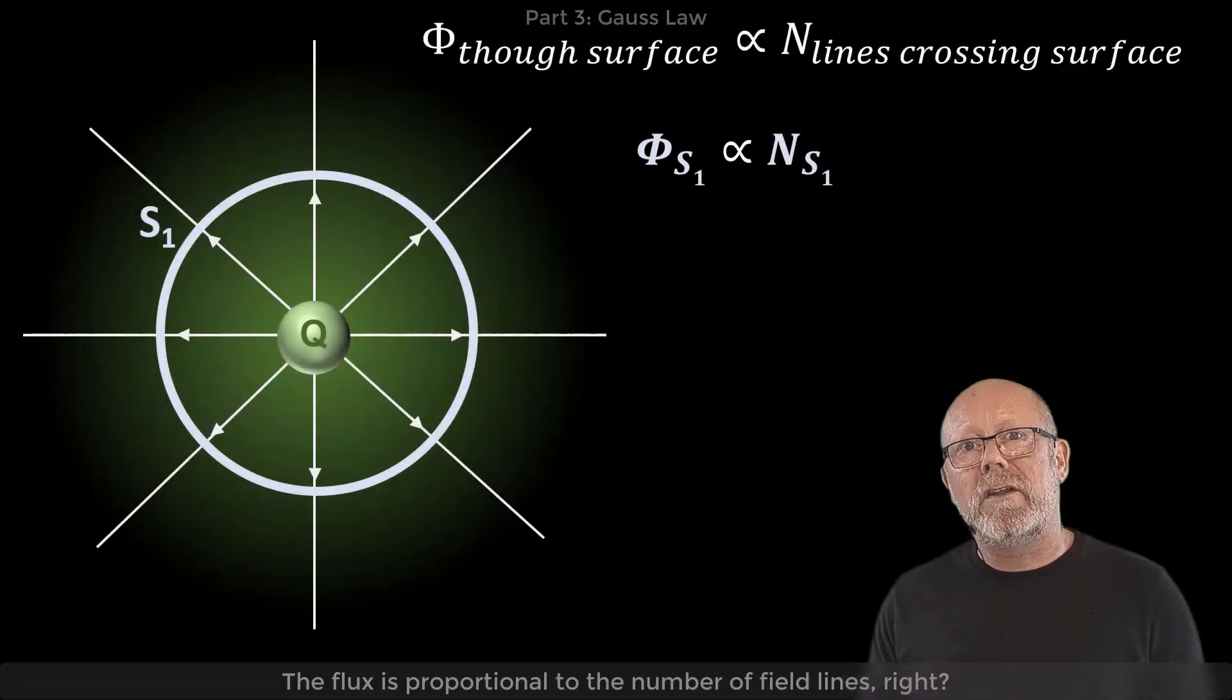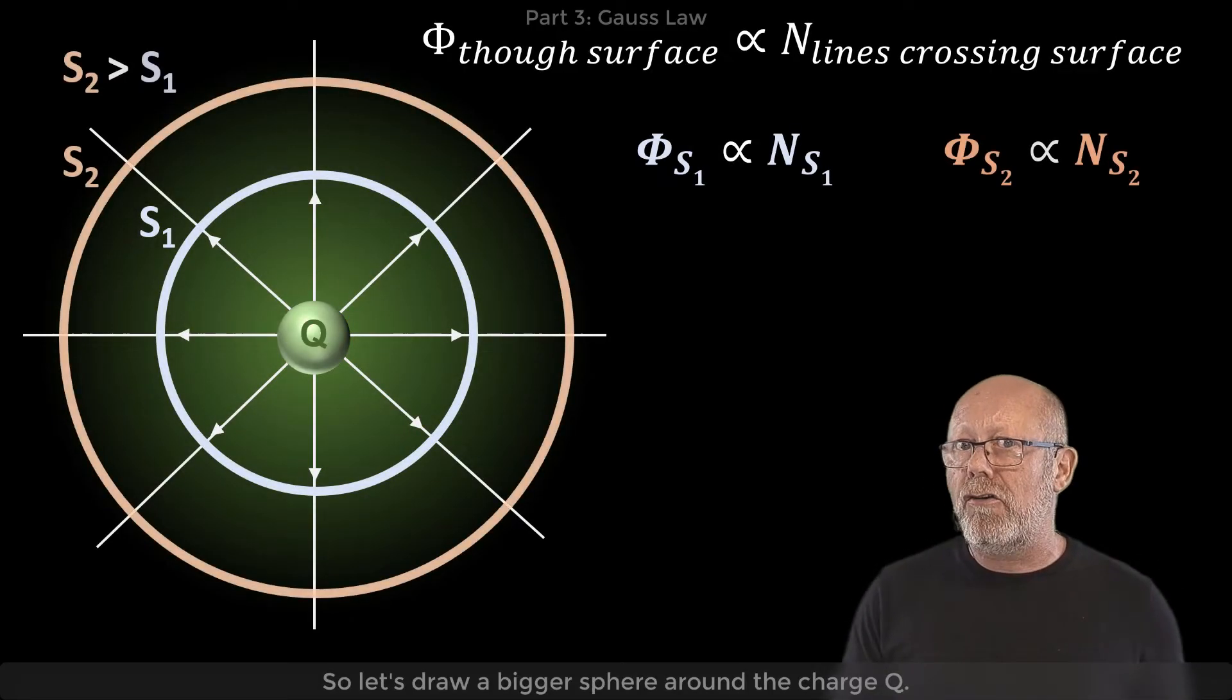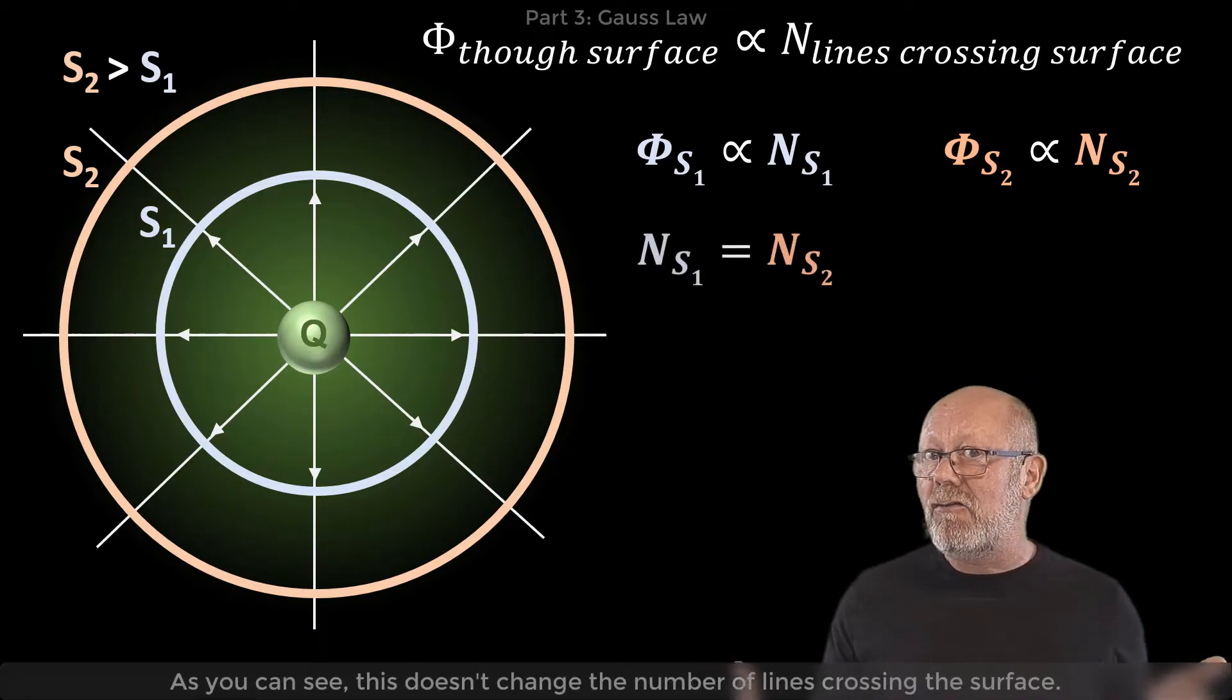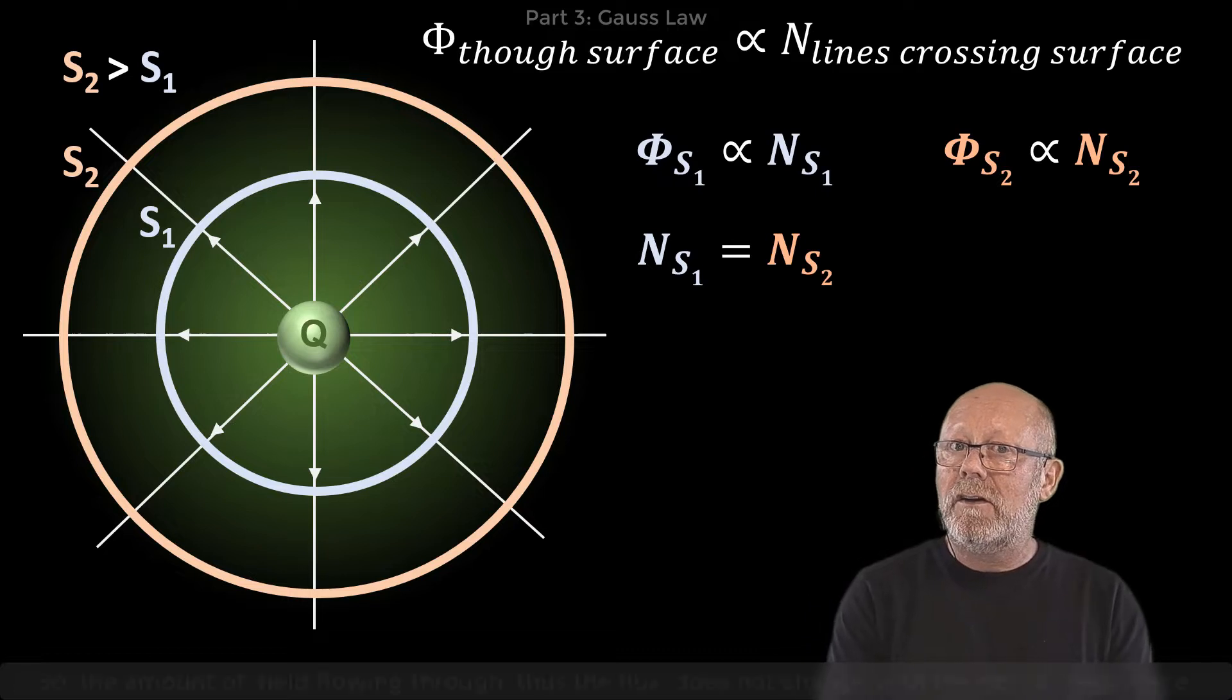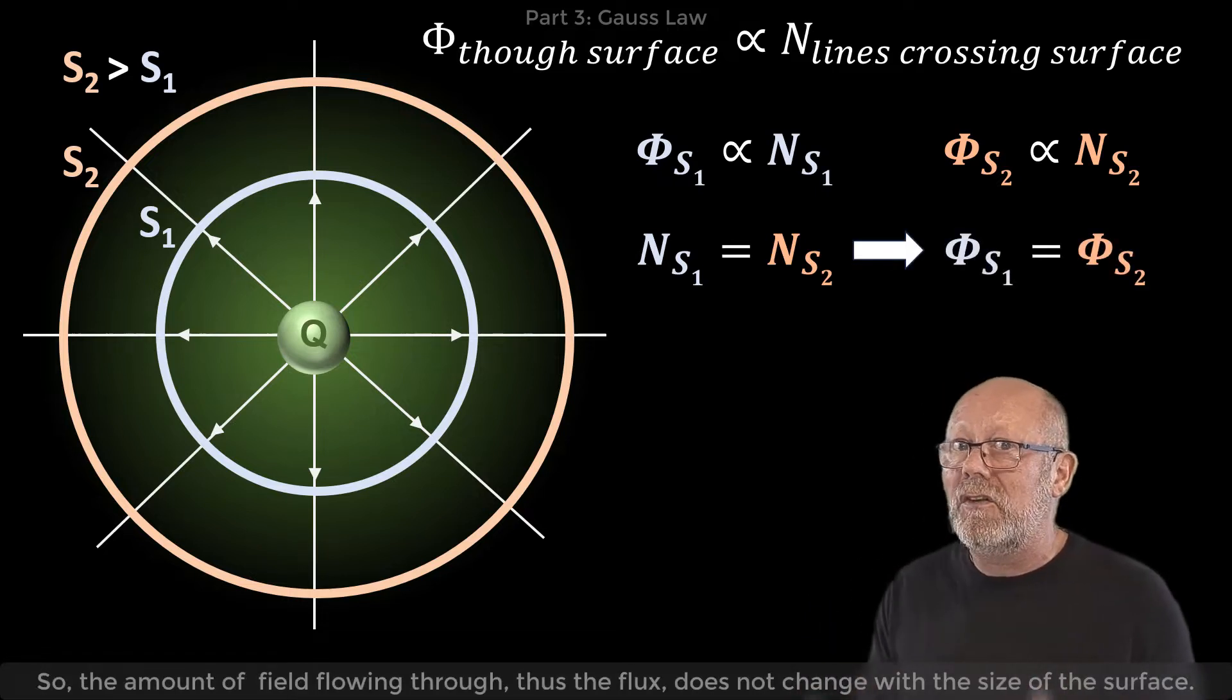The flux is proportional to the number of field lines, right? So let's draw a bigger sphere around the charge Q. As you can see, that doesn't change the number of lines crossing the surface. So the amount of field flowing through, thus the flux, does not change with the size of the surface.